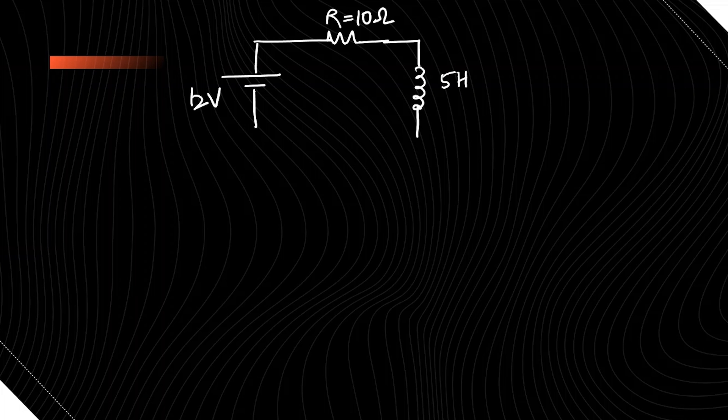Inductance is 5 Henry, so we are given this circuit and the current I is flowing through the circuit of 0.4 ampere. So we have to find out when the current 0.4 is flowing through the circuit, the rate of energy stored in inductor.